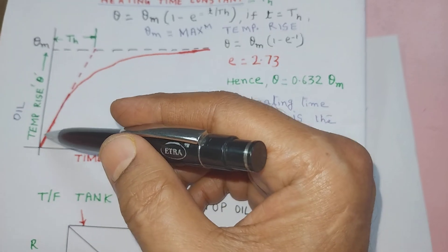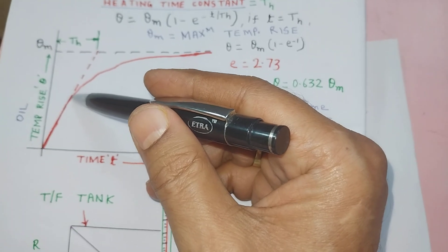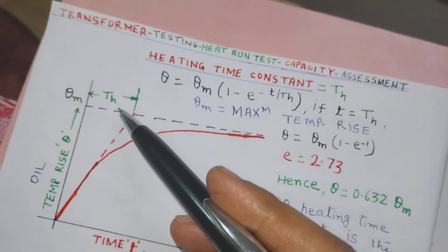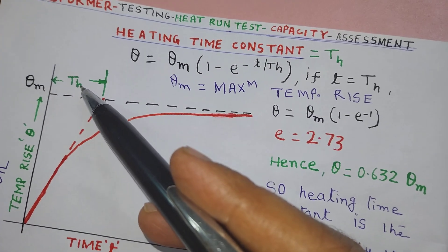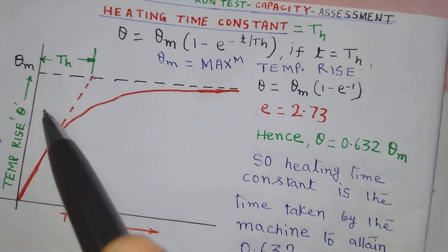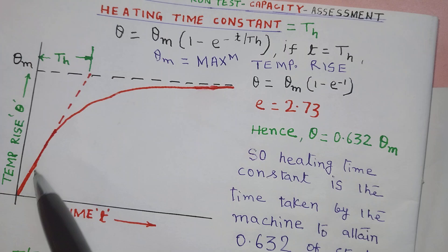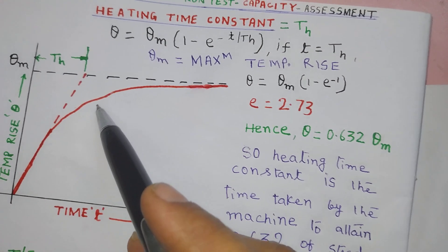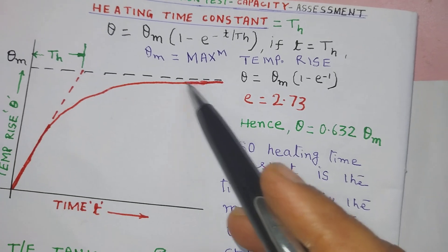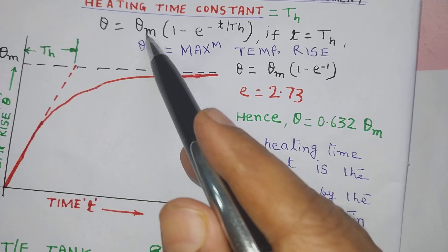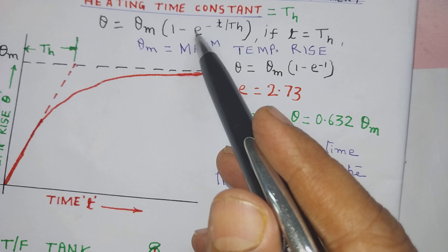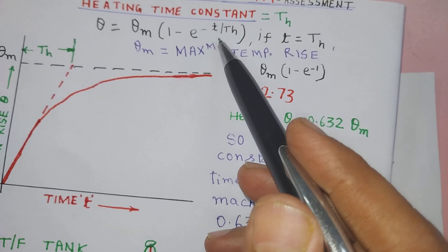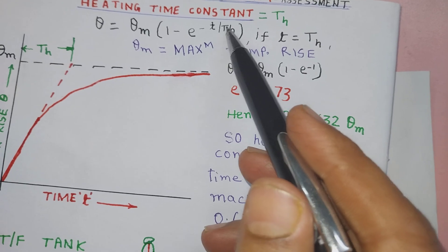Drawing a straight line through this curve at the beginning, we get TH that is heating time constant. Now, temperature at any instant of time, say this instant or this instant, may be determined from the formula theta equals theta m times 1 minus exponential to the power minus T by TH.